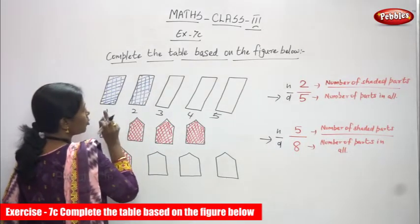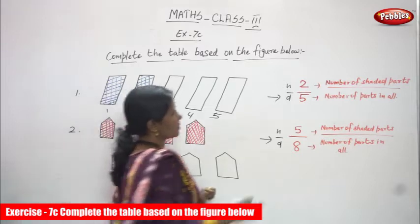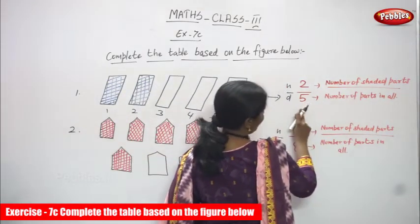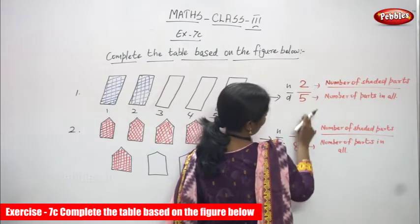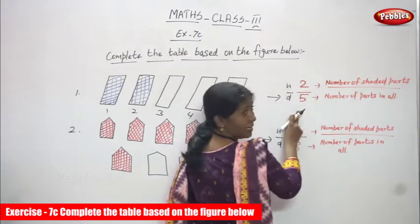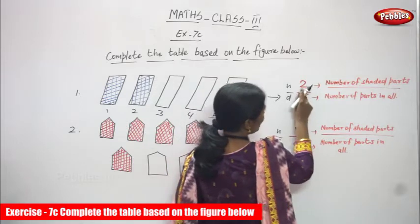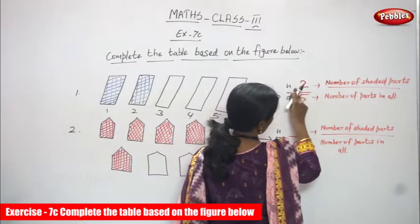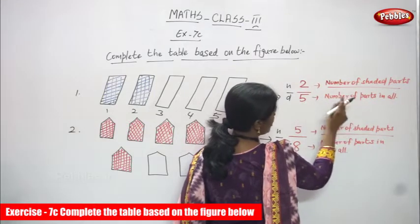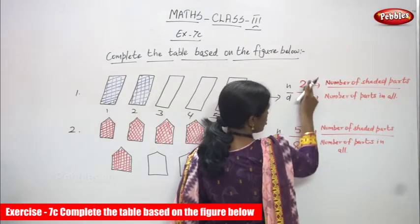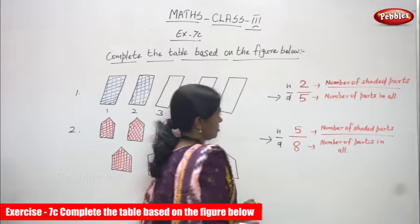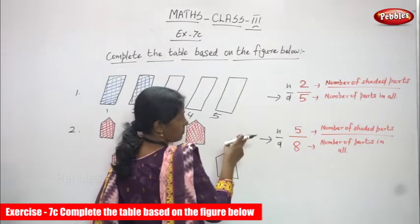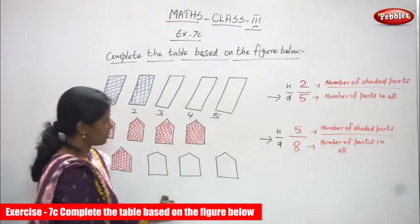But I shaded how many parts? Only 2 parts. Number of shaded parts is 2 and number of parts in all is 5. That is called 2 by 5. 2 is the top number and 5 is the bottom number. 2 is the numerator and 5 is the denominator. So, 2 by 5 is the fraction.